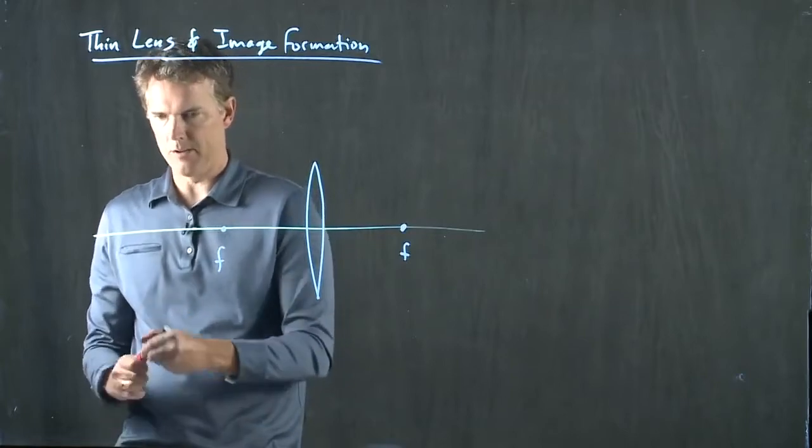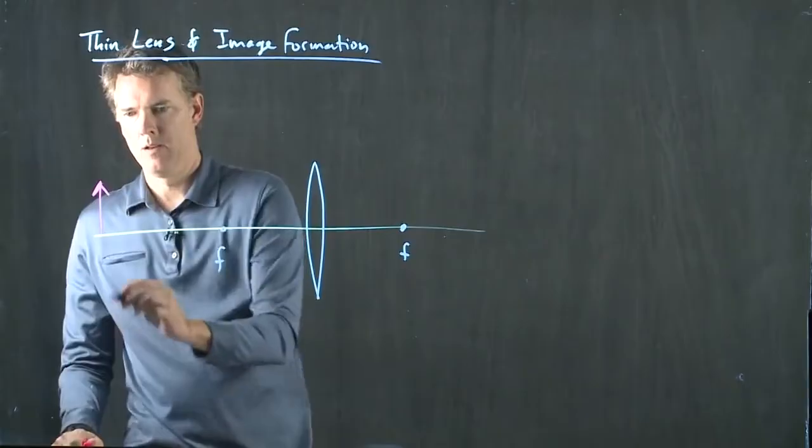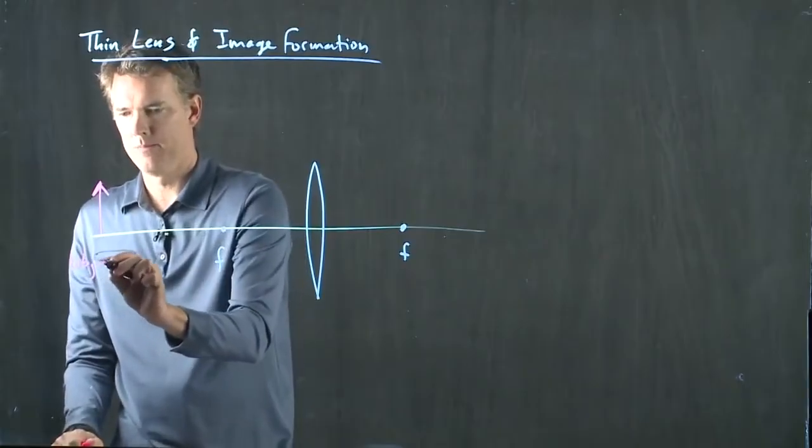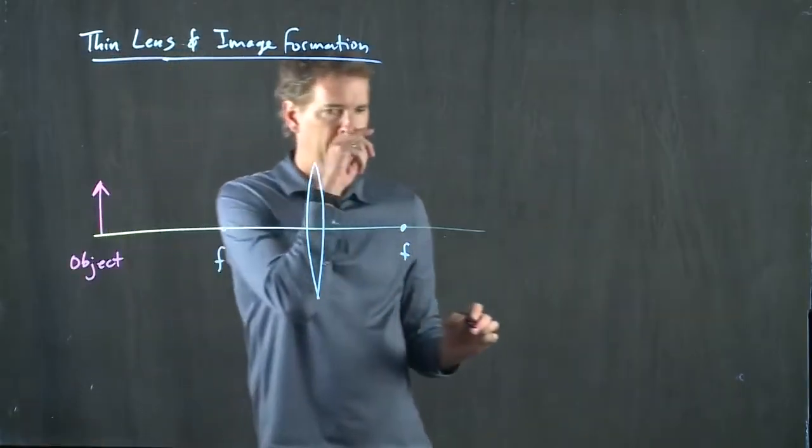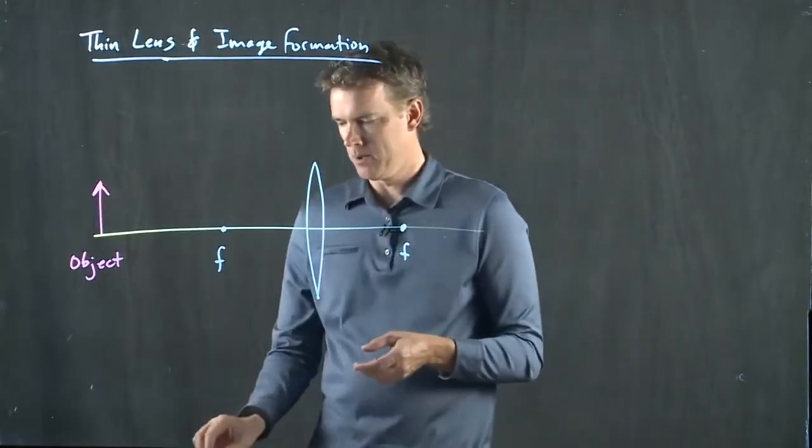Let's put our object out here somewhere. How about right there? That's our object. And now we want to figure out where the image is. How do we form that image?